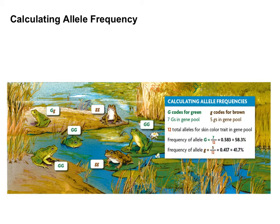Scientists and biologists calculate allele frequency because when allele frequency changes from generation to generation, we can actually show that microevolution is happening. If the allele frequency stays the same, then the population is not evolving. But if something happens where brown frogs become at an advantage and the green frogs start to die off, the allele frequency will start changing, and you'll have a much higher percentage of little g alleles in the population — and that can show microevolution.